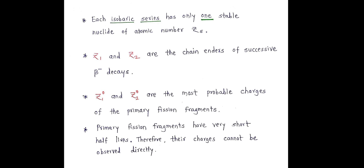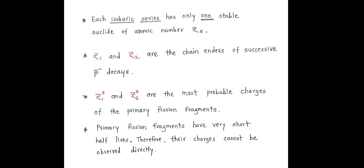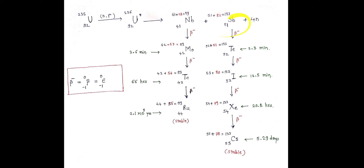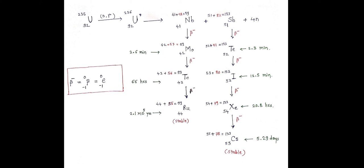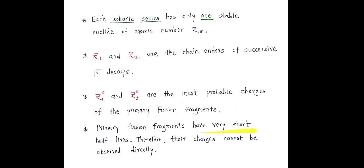Primary fission fragments have very short half-lives. When we consider this series, the half-life period of niobium and antimony is very small compared to molybdenum, technetium, and ruthenium. There is successively an increase in half-life period in both series. So niobium and antimony, which are the primary fission fragments, have very short half-lives. Therefore, their charges cannot be observed directly. Niobium has charge Z10 and antimony has charge Z20, but as their half-lives are very short, we cannot determine their charges directly. We have to determine their charges by another method.